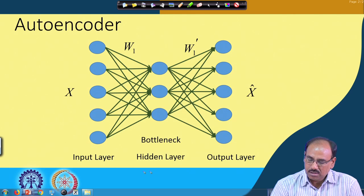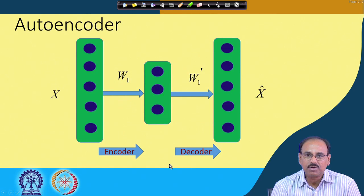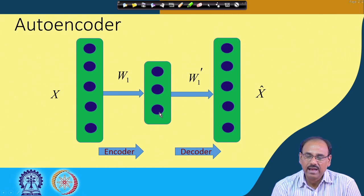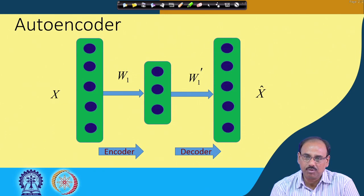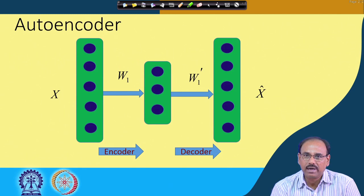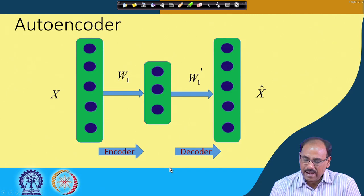This is the base architecture of an autoencoder: an input layer, an output layer, and a hidden or bottleneck layer. For simplicity, the input layer is represented as an array of nodes, the hidden layer as another array of nodes where the array size in the hidden layer is usually less than in the input layer, and the output side also has an array of nodes. There is a set of weights W1 connecting the input layer to the hidden layer, and W1' connecting the hidden layer to the output layer. It is also possible to have multiple hidden layers instead of just one.